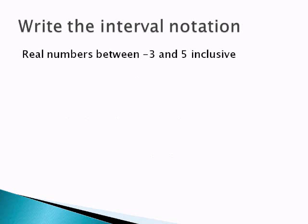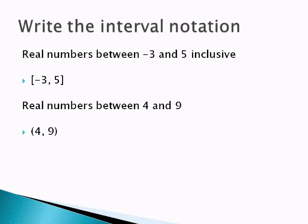Interval notation. This is basically the same idea, we just don't have the graph. So if we're inclusive between negative 3 and 5, we're going to put the numbers negative 3, 5 in those square brackets. Similarly, between 4 and 9, since it's not inclusive, we're going to use curved brackets.